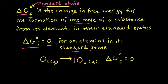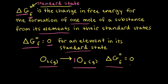Therefore, if we think about forming one mole of oxygen gas, we would be making it from elemental oxygen, which is also oxygen gas. So forming one mole of oxygen gas from one mole of oxygen gas means there would be no change, and therefore the standard change in free energy of formation is equal to zero.